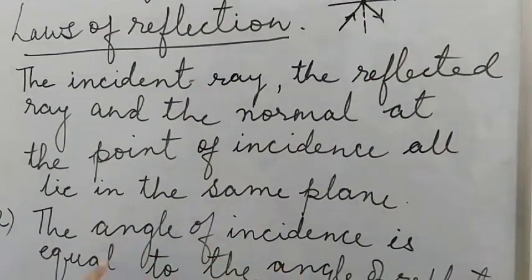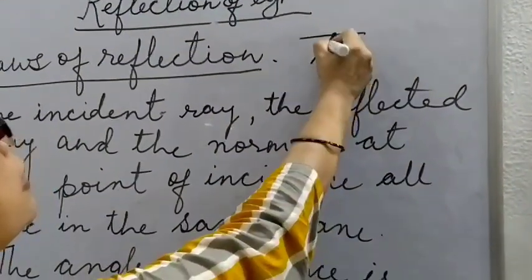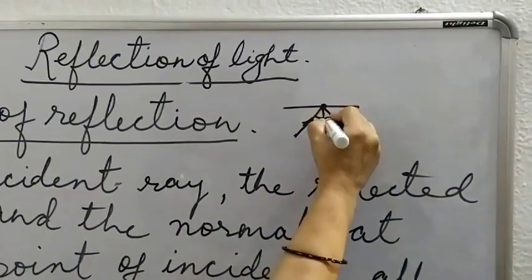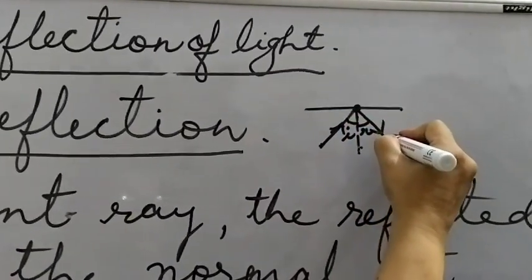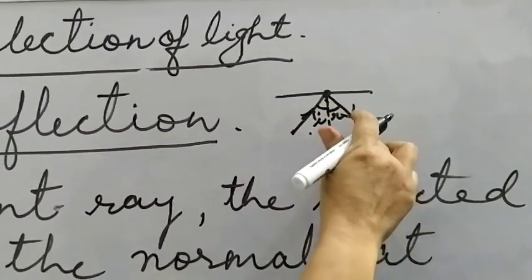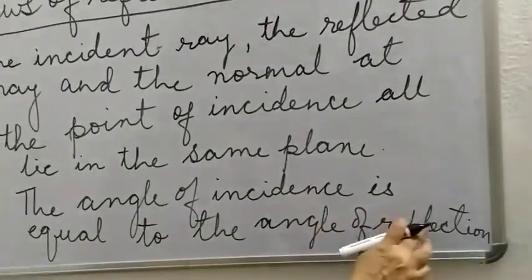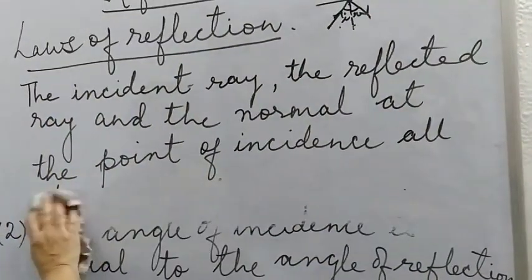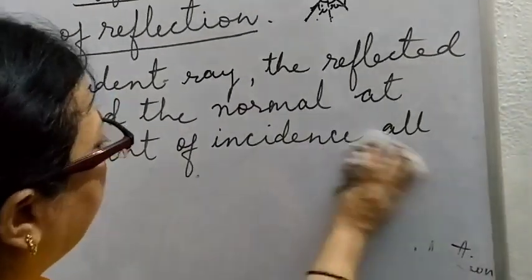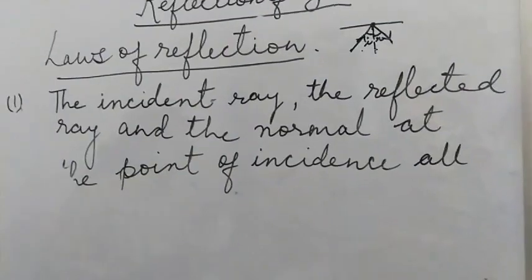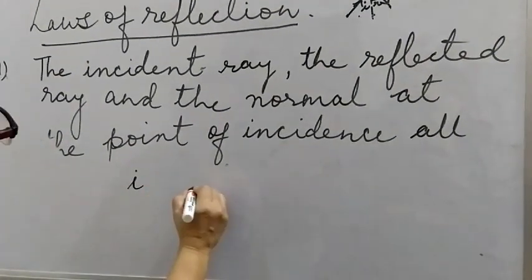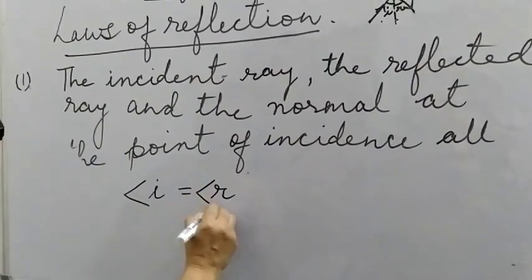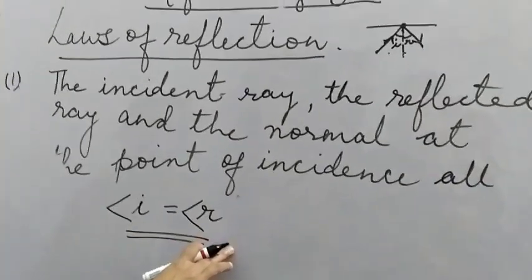The second law of reflection implies that the angle of incidence is equal to the angle of reflection. That means if we denote the angle of incidence with small i and the angle of reflection with small r, then i is equal to r. This is the second law of reflection.